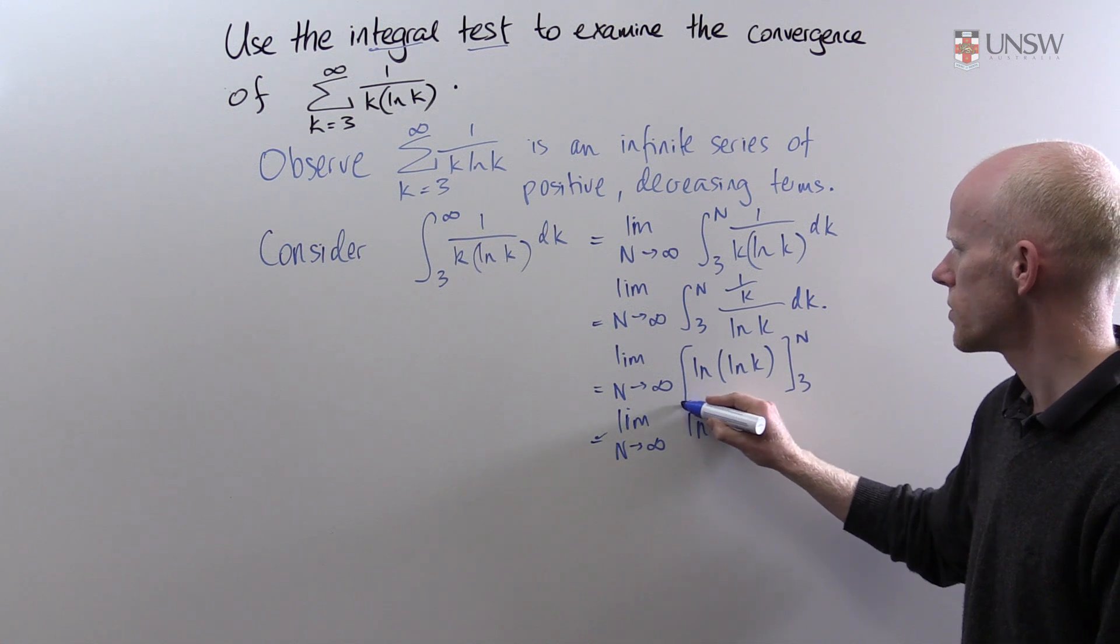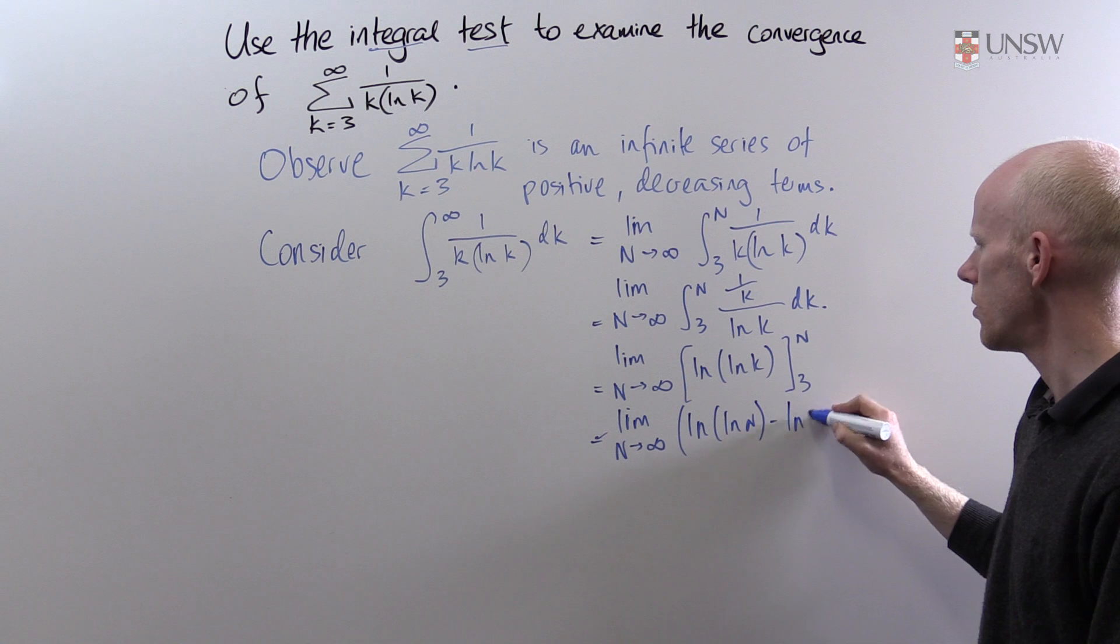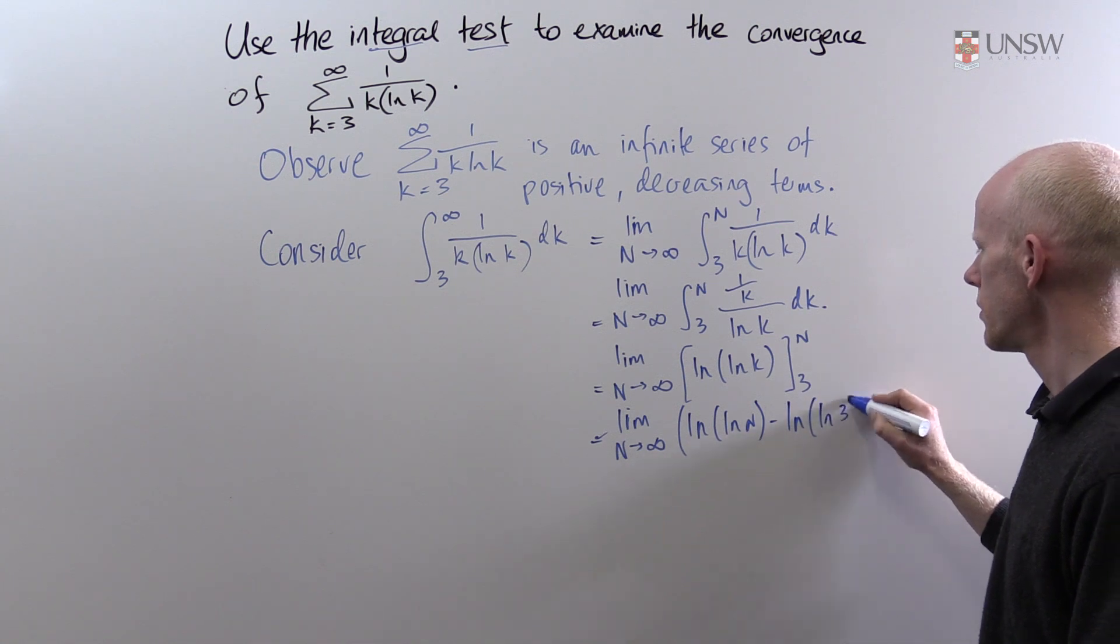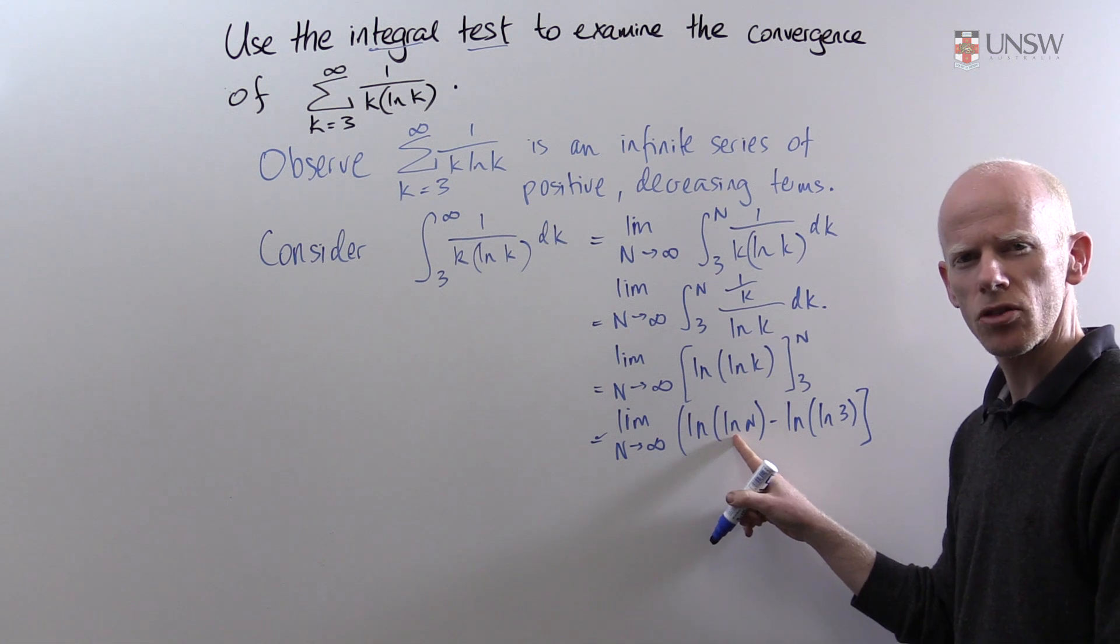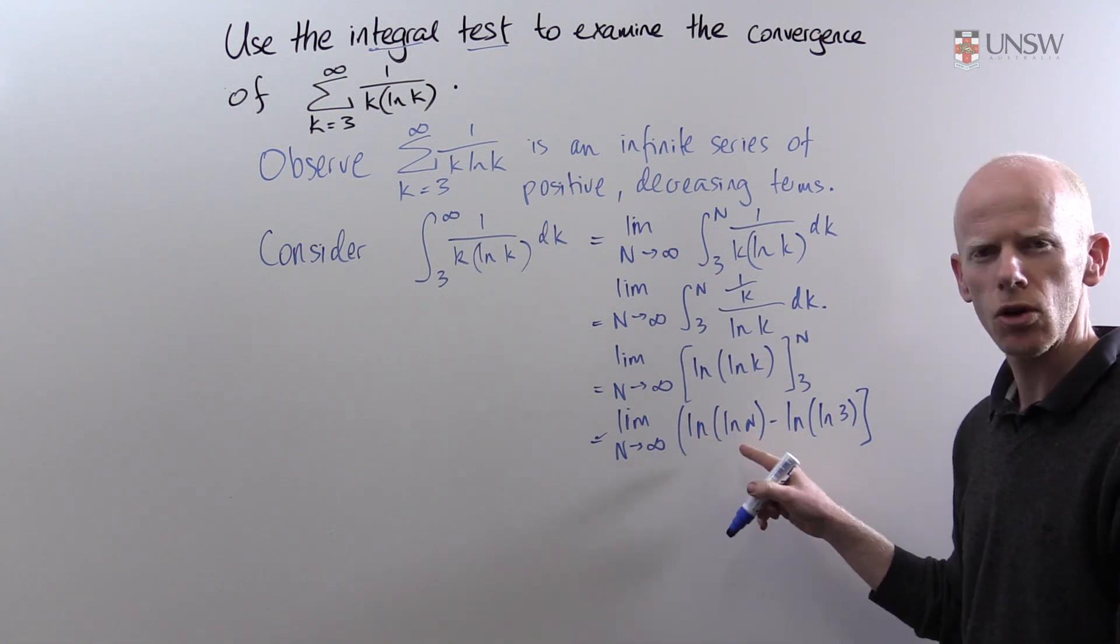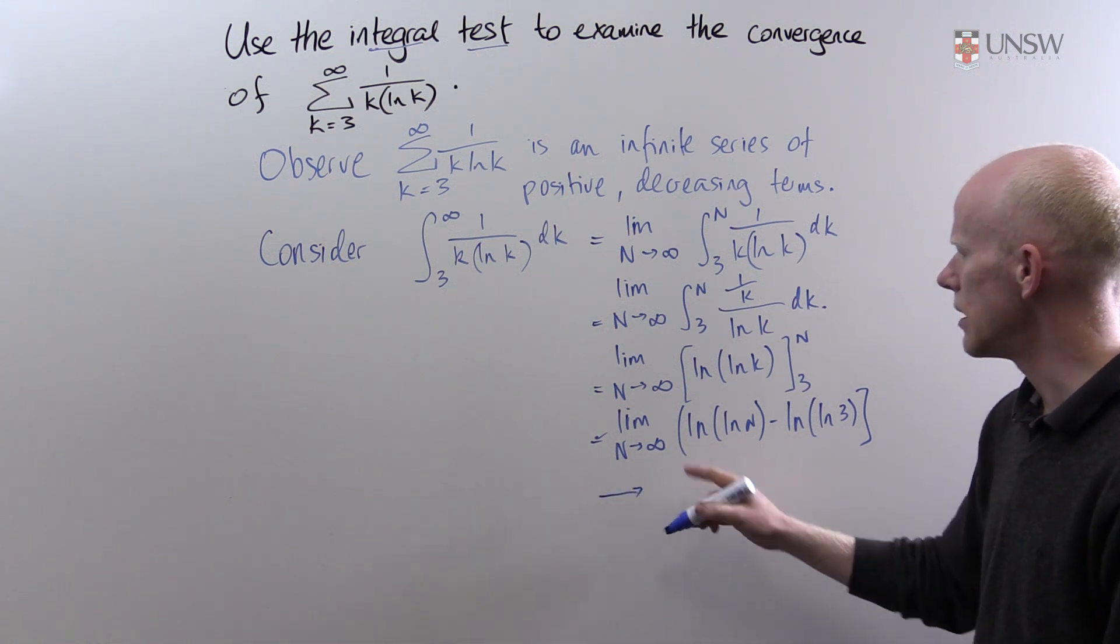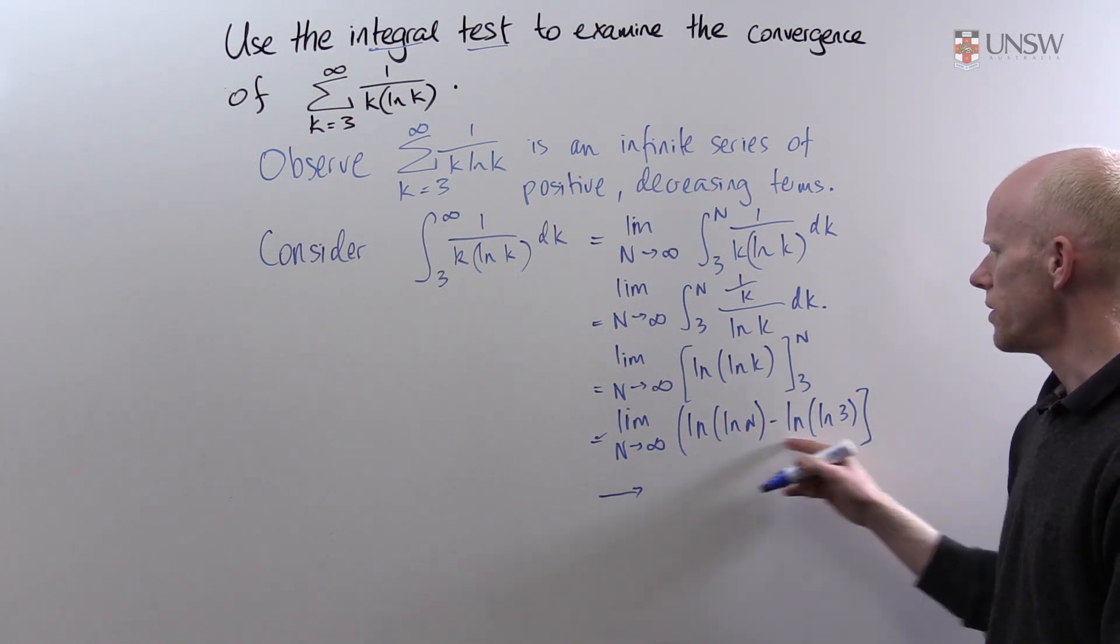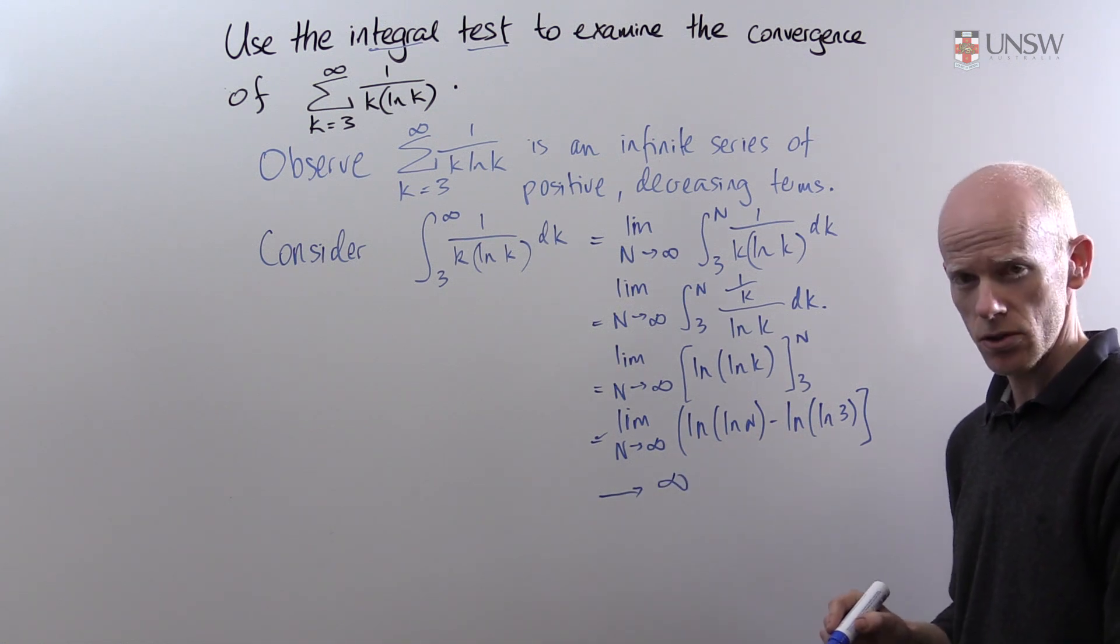So this becomes log log n minus log log 3. And because log n diverges then log of log n diverges and we can say that the limit of this expression here must tend towards infinity as n tends towards infinity.